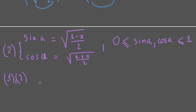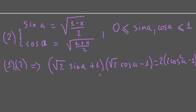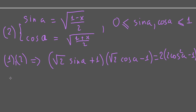From substitutions 1 and 2 we rewrite the original equation under the substitution. Then we have the square root of (sin a + 1) multiplied by the square root of (sin a + 1), times the square root of (sin a minus 1), equal to 2 cos a minus 1 times (sin a plus 1). So now we see a completely new equation containing only trigonometric terms like sin a and cos a.